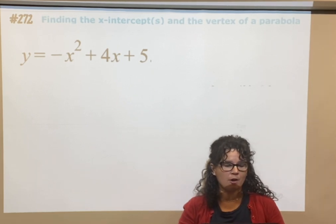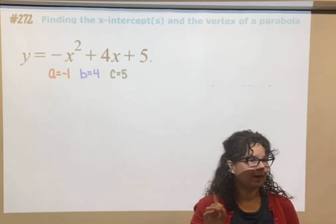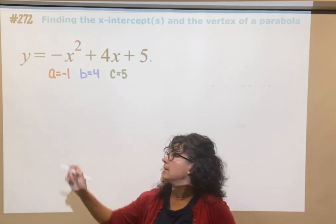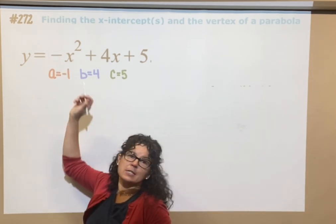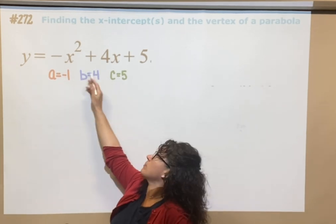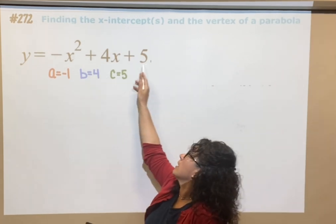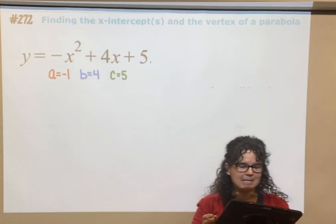I'm going to start off with finding the vertex. First thing you want to do is identify a, b, and c. So the number in front of x squared is a, so a is negative 1. The number in front of x is b, so b is 4. The number at the end there is c, c is 5.